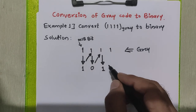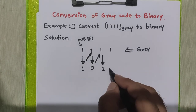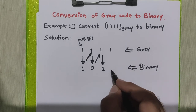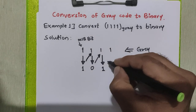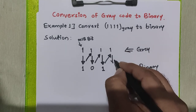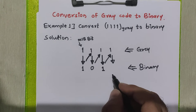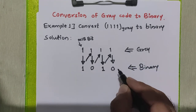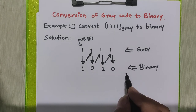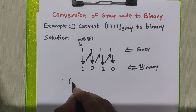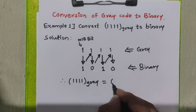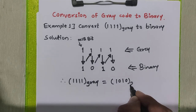In the last step, to get the fourth bit of the binary code, we need to add the third bit of binary with the fourth bit of grey. One plus one is zero with carry one, so zero is written here and the carry is ignored. Therefore, we can say that 1111 grey equals 1010 in binary.